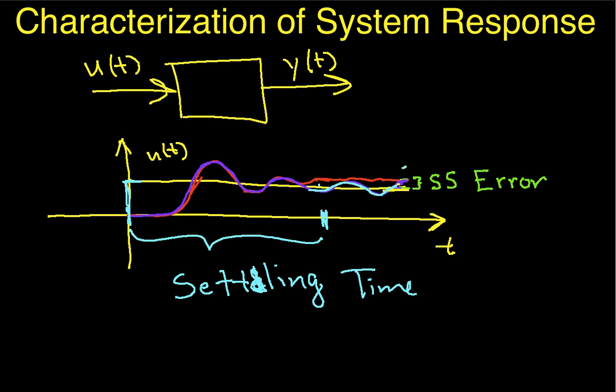Okay, so the settling time basically tells us how long it takes the system to get pretty close to steady state. Another thing that we might look at, or value that we might look at, is the time it takes our signal to go from, say, 10% of its final value to 90% of its final value. So the time that it takes to go from 10% to 90% this time here is often called a rise time.